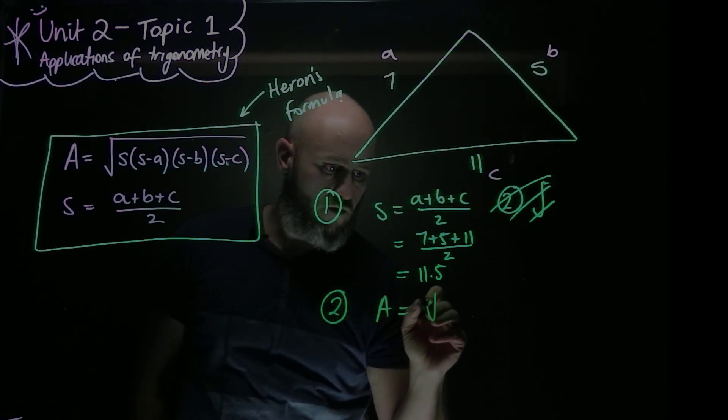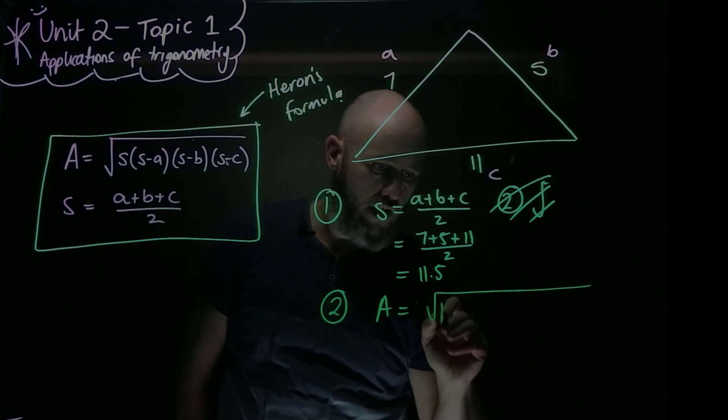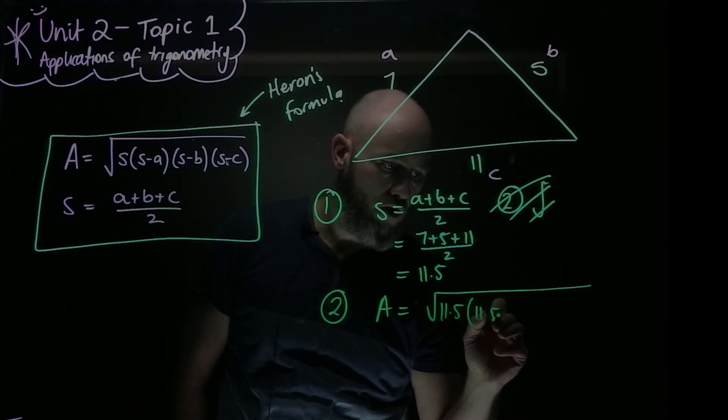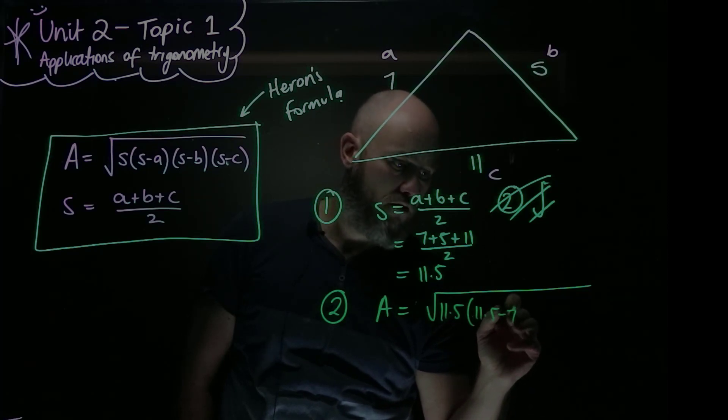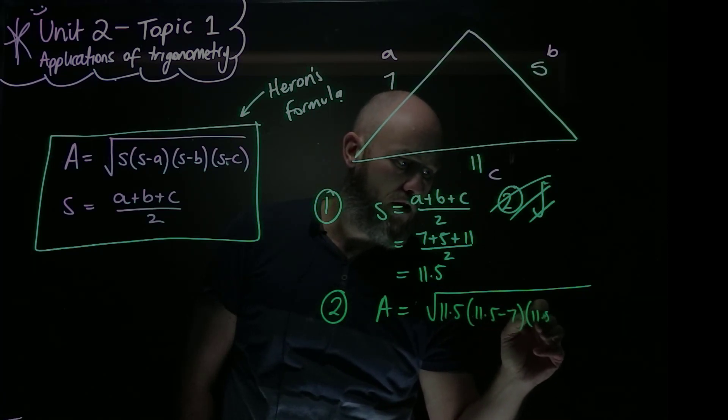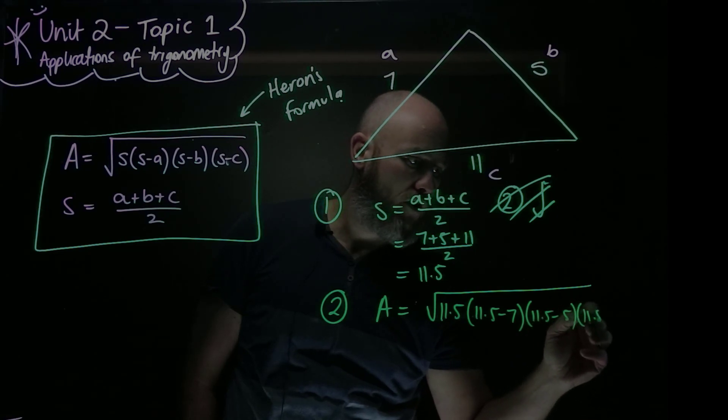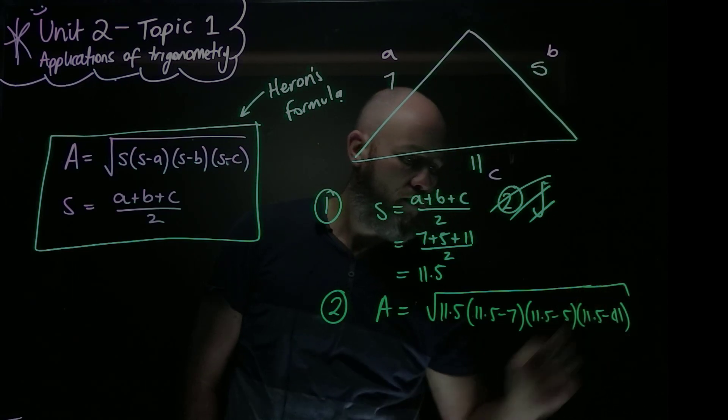Area equals the square root of 11.5, which is S, times 11.5 minus A, which is 7, times by 11.5 minus B, which is 5, times by 11.5 minus C, which is 11. There.